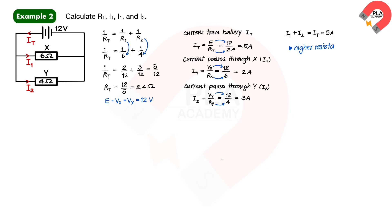So, higher resistance leads to lower current, and lower resistance leads to higher current.